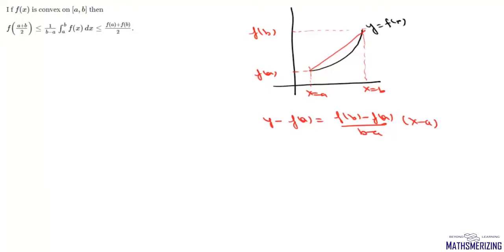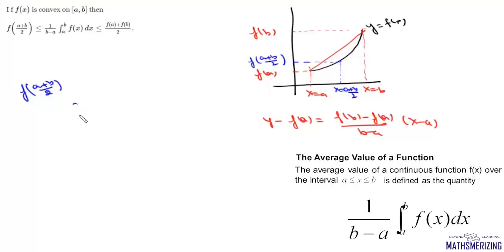Now if we look at f((a+b)/2), it will be the value of this function at the midpoint (a+b)/2. And the integral from a to b of f(x) dx divided by (b − a) is nothing but the average value of this function in the interval [a, b].